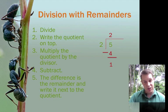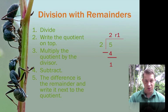Then we need to subtract so we can find the remainder. 5 minus 4 is 1. And that difference is our remainder. And we write it next to the 2.